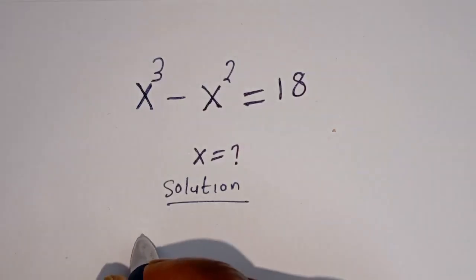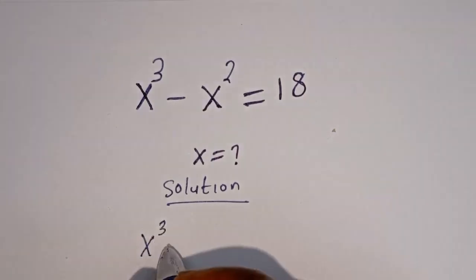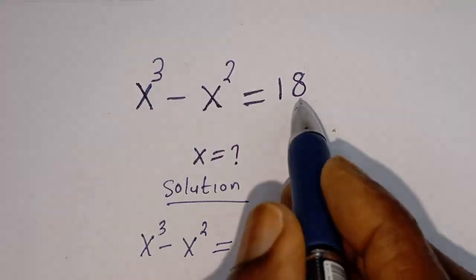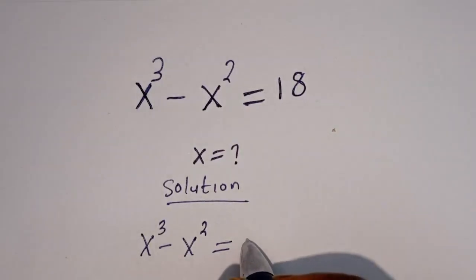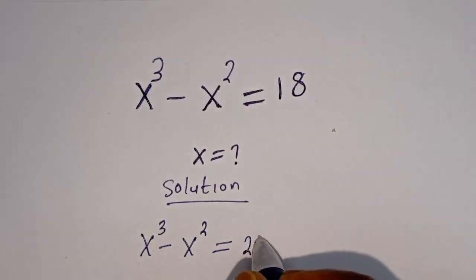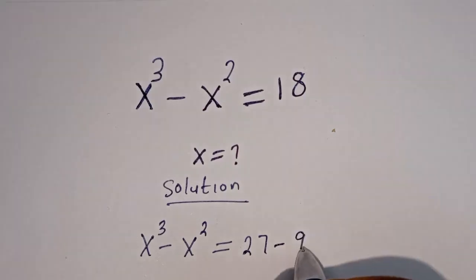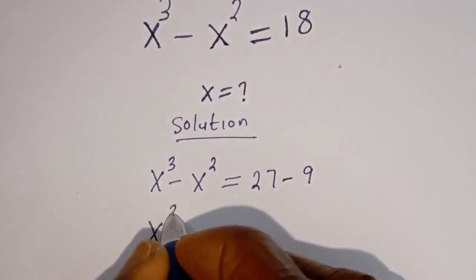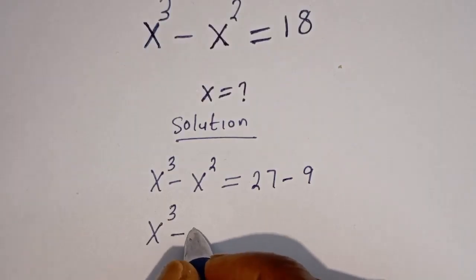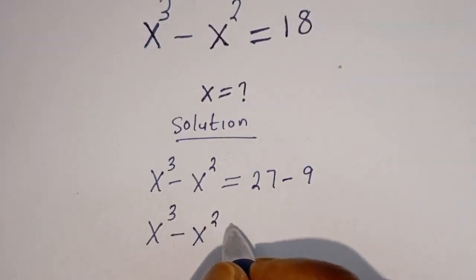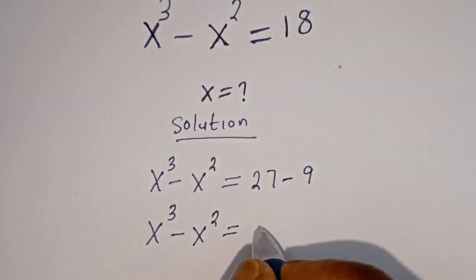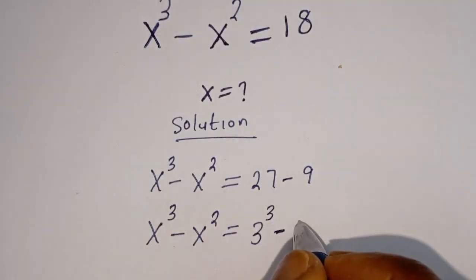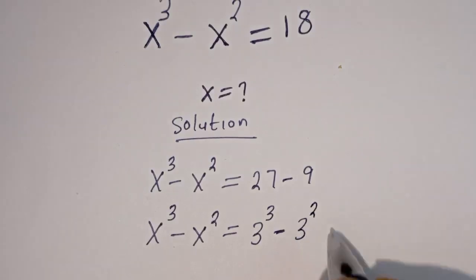We have S to the power of 3 minus S squared is equal to 18. This 18 can be written as 27 minus 9, which is 3 to the power of 3 minus 3 squared.